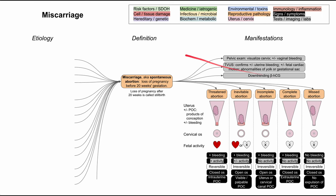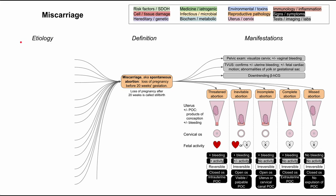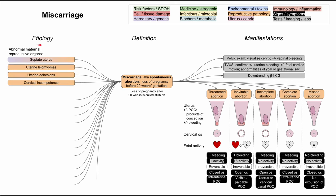Now that we've covered the definition and manifestations of miscarriage, let's talk about the varied etiologies. There are many things that can cause miscarriage and spontaneous abortion. It's actually quite common, and knowing how common miscarriages are can be reassuring to women who experience them. We've categorized the etiologies into groupings to help keep them straight when making a differential diagnosis.